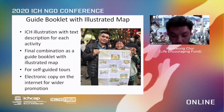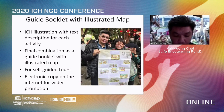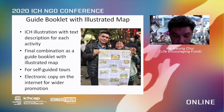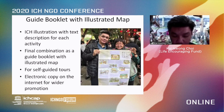During the project implementation, ICH illustrations with text descriptions are produced one by one for advertisement of the corresponding activities. In the end, a guidebook with an illustrated map of ICH elements in Yuen Long district is published for residents and travelers to Hong Kong for self-guided tours. Apart from free hard copies, an electronic copy in PDF format is available on the internet for wider promotion.